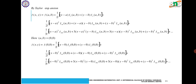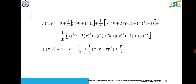Using the Taylor expansion formula and substituting the above values, we get: f(x, y) = y + xy − y²/2 + (1/2)[x²y − xy² + y³/3] + etc., up to third degree terms.